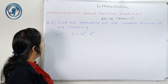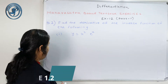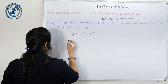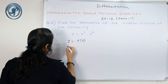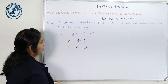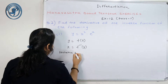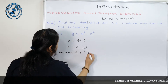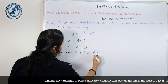Question 2 says: find the derivative of the inverse function of the following. Means हमें derivative इसका नहीं find करना है, इसके inverse function का derivative find करना है. So, if suppose y equals to fx, तो f inverse equals to x inverse y. अब हमें किसका derivative find करना है - derivative of inverse function. That means dx upon dy.